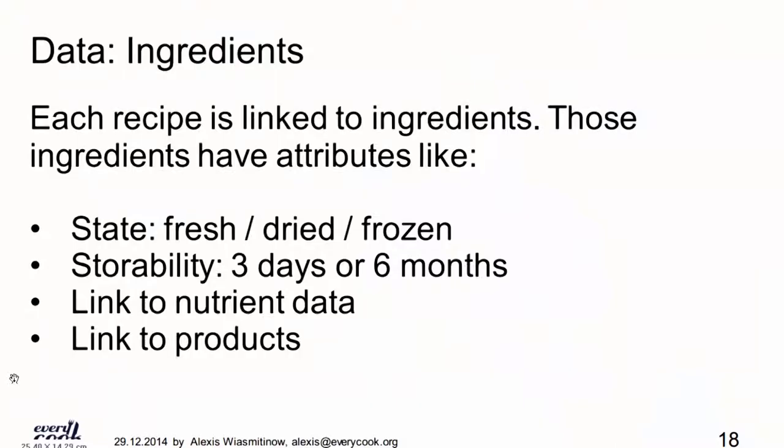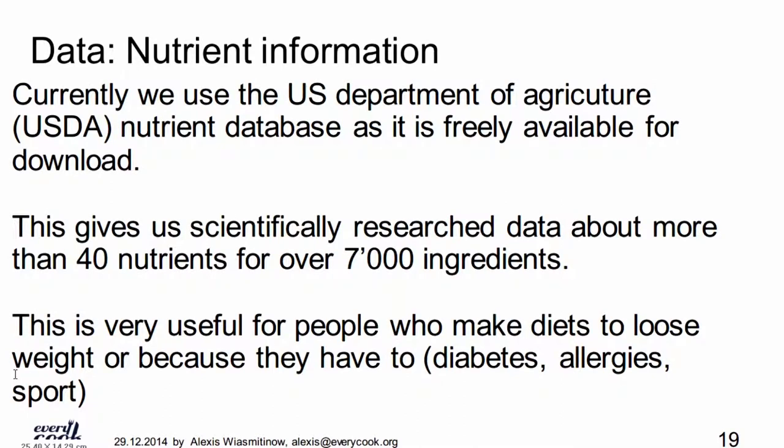For ingredients, what state is it? Is it fresh, dry, or frozen? How long can you store the ingredient? We link it directly to nutrient data, and later: how well can it be stored? So we can later connect it to shops — if we have onions, we can connect to the farmer who sells those onions.